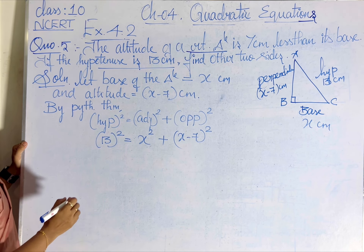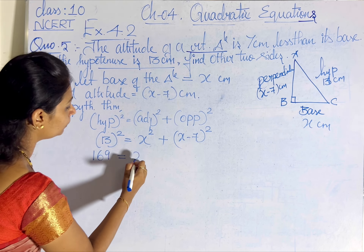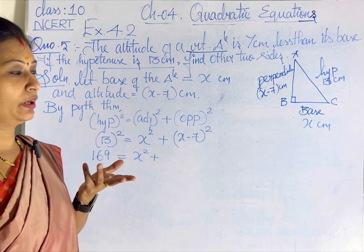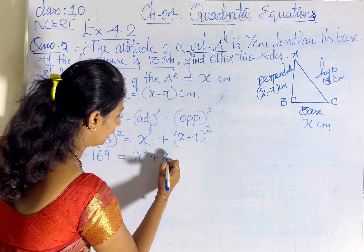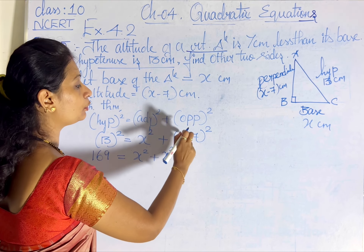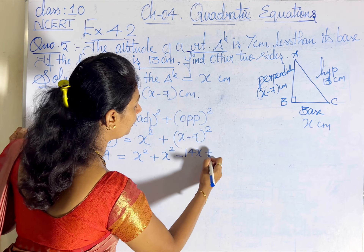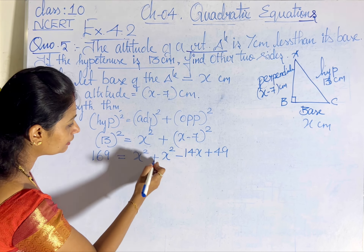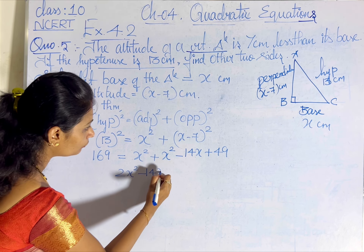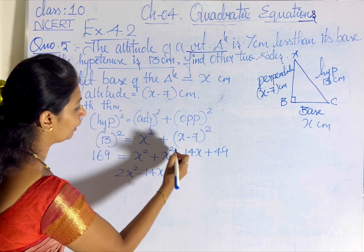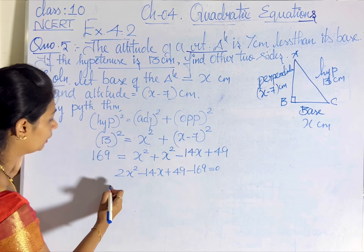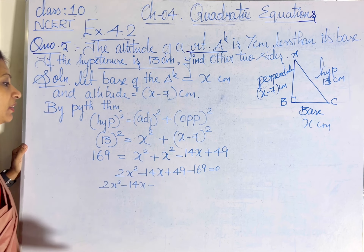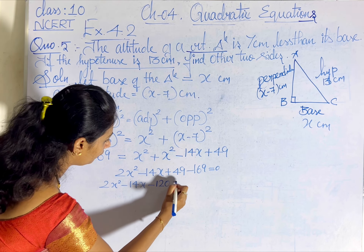So 13 squared is 169, which equals x squared plus the expansion of (x minus 7) squared. We expand using the algebraic identity (a minus b) squared: x squared minus 2 times x times 7 plus 7 squared, giving x squared minus 14x plus 49. So we have 169 equals x squared plus x squared minus 14x plus 49. Taking 169 to the other side: 2x squared minus 14x plus 49 minus 169 equals 0.